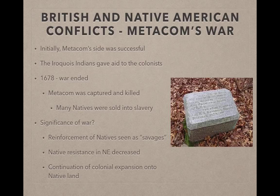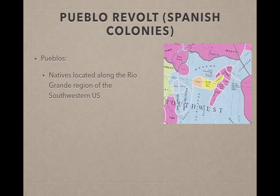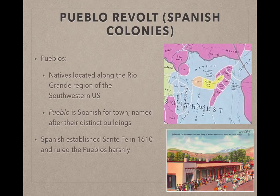This is an example of conflict between natives and the British colonies. Now let's look at one between natives and the Spanish colonies — the Pueblo Revolt. The outcome is very different, and this could make for great information in a compare and contrast essay about Spanish versus British colonies. The Pueblos were natives located along the Rio Grande region in the southwestern present-day United States, in New Mexico for example. 'Pueblo' is the Spanish word for town, named after their distinct buildings. Spain established Santa Fe in New Mexico in 1610 and ruled the Pueblos harshly — there were 2,000 Spanish and 30,000 Pueblos, so the Pueblos drastically outnumbered the Spanish.